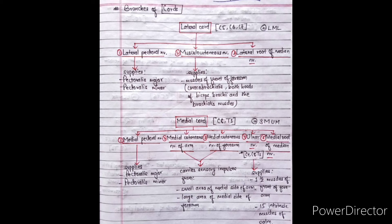The lateral cord has root value C5, C6, and C7, so all its branches share this root value. We can remember the branches using the mnemonic 'LML': L for lateral pectoral nerve, M for musculocutaneous nerve, and L for lateral root of median nerve. The lateral pectoral nerve supplies pectoralis major and minor. The musculocutaneous nerve supplies muscles of the front of the arm: coracobrachialis, both heads of biceps brachii, and the brachialis muscle.